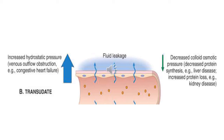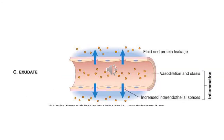In conditions like congestive heart failure, the pressure balance is not maintained — there is increased hydrostatic pressure and fluid flows from the capillary into the interstitial fluid; this process is called transudate. In the case of inflammation, histamine is released and acts on the endothelial cells of the capillaries, increasing the space between them. Because this space is increased, along with the fluid the plasma proteins also leak out of the capillaries — this process is called exudate, and this phenomenon is seen in case of inflammation.